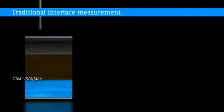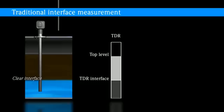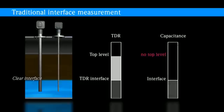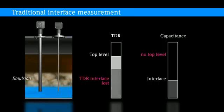If traditional methods for interface layer measurement are compared, it becomes apparent that guided radar principles provide reliable values for level and interface if the interface is clear. However, if an emulsion occurs, only the overall level can be measured.